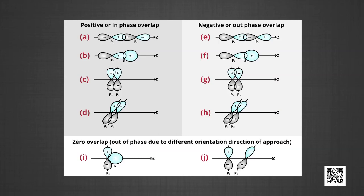The figure shows positive and negative overlap. The positive and negative signs on the boundary surface diagrams depict the phase of the orbital wave function and are not related to charge. Orbitals forming bonds should have the same sign, that is, same phase and orientation in space — this is called positive overlap. The various overlaps of s and p orbitals are depicted in the figure.